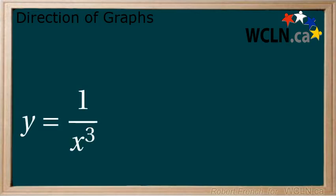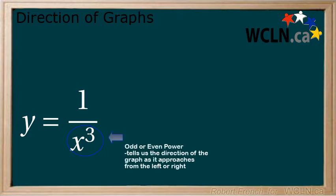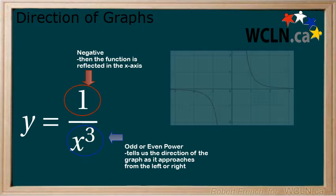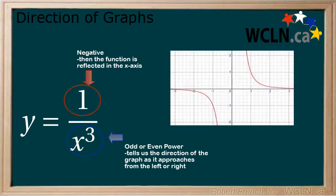First, we need to find the largest power in the denominator and determine if it is odd or even. This will tell us the direction of the graph. If the largest power in the numerator has a negative, then the graph is reflected. One important point to remember is that when we divide by smaller and smaller numbers, the results get larger.